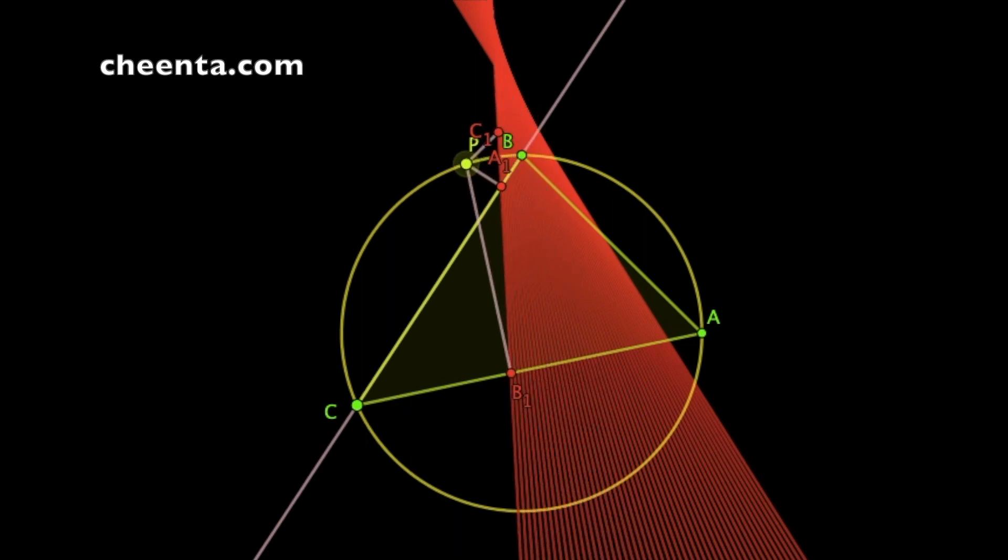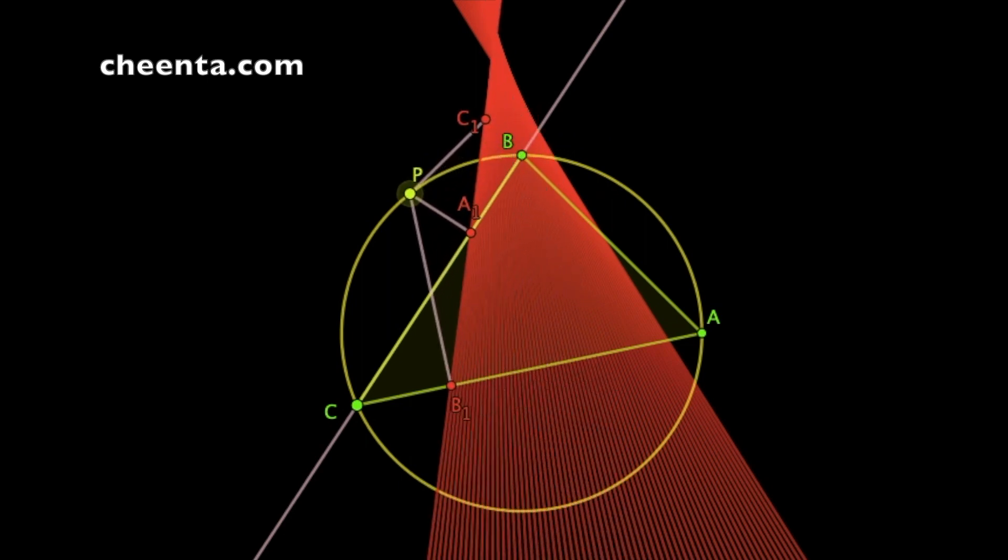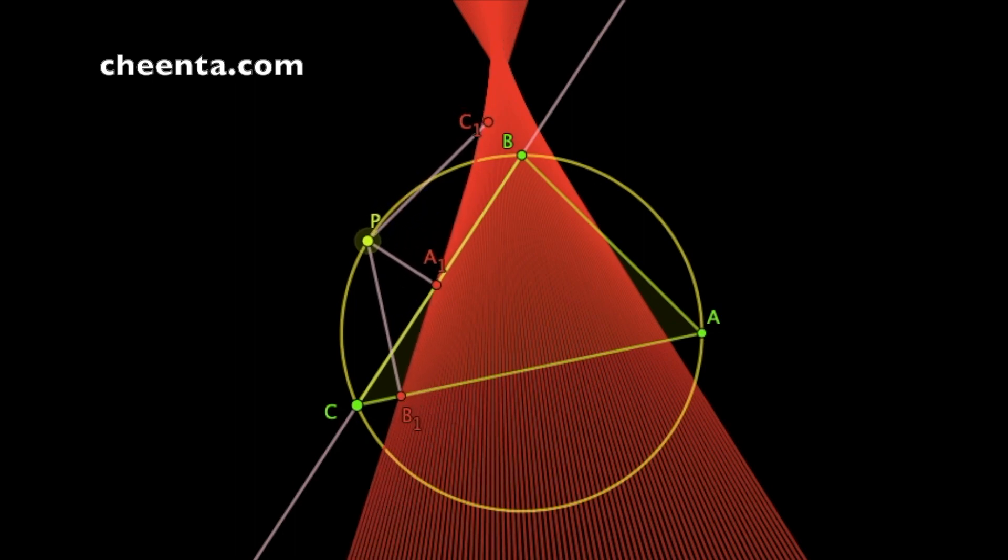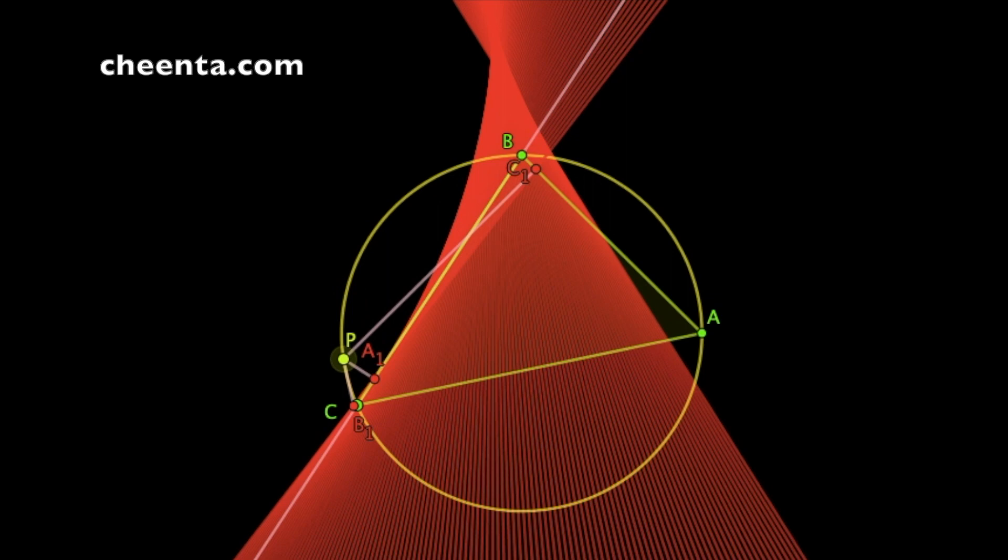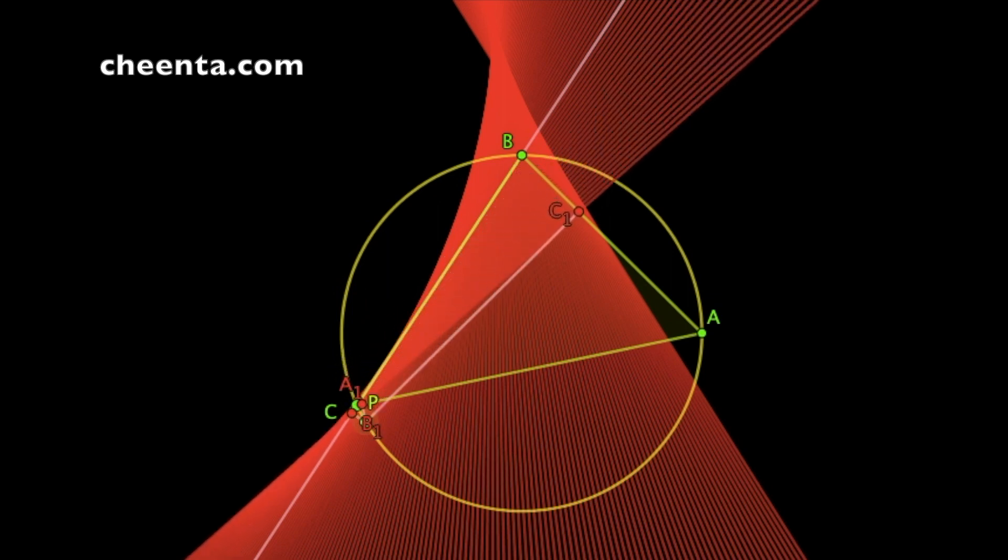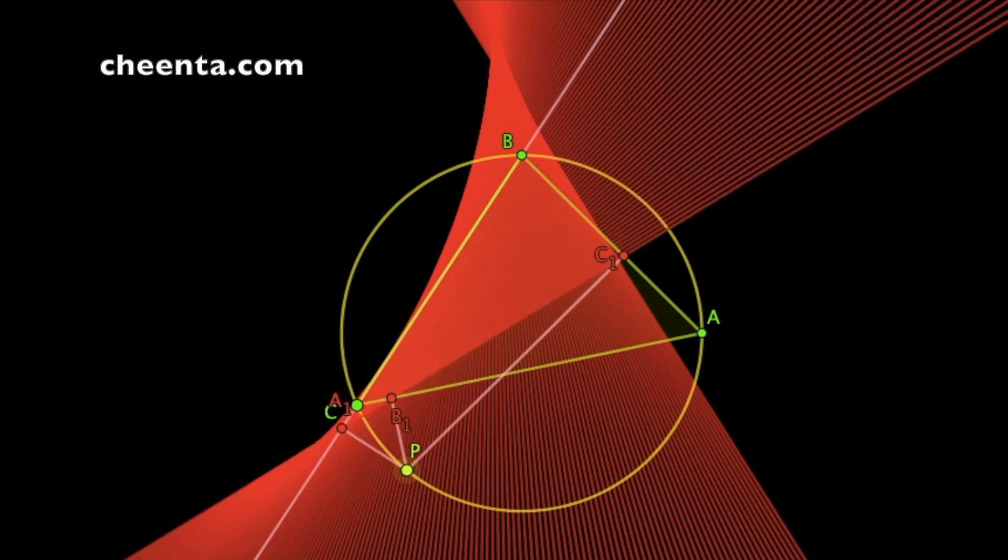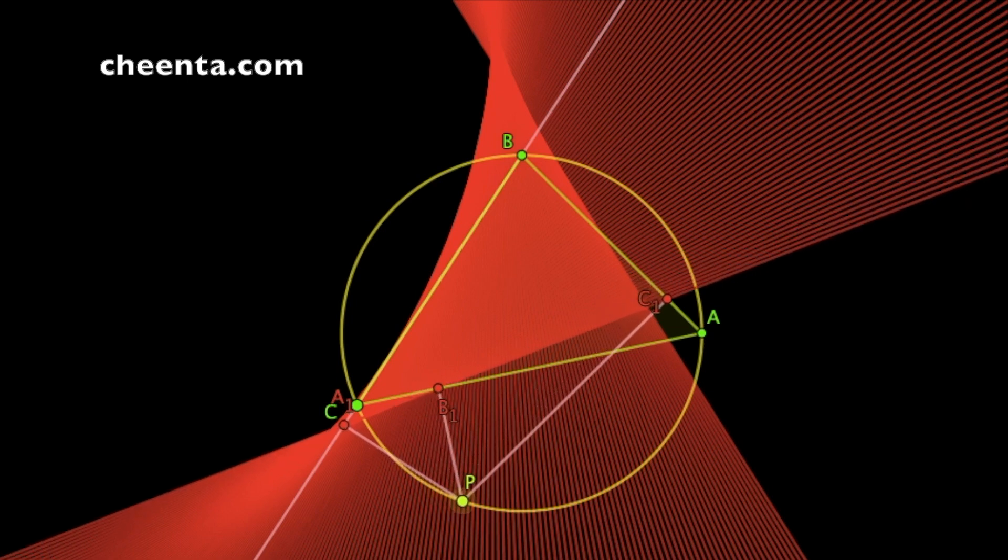As P runs along the circumference the Simpson line also moves and it envelopes or creates a very beautiful symmetric structure which is looking like a curved triangle.